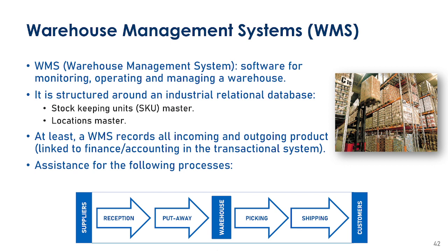There are two core components within a Warehouse Management System, which contains a relational database. These two core components are two tables: one is for the Stock Keeping Units and the other one is for the locations — these are the two master tables.